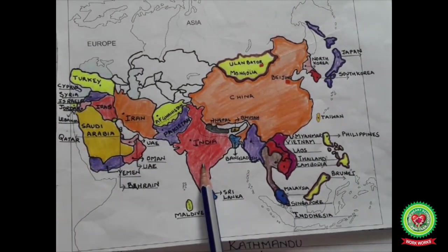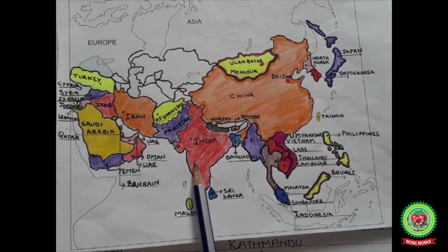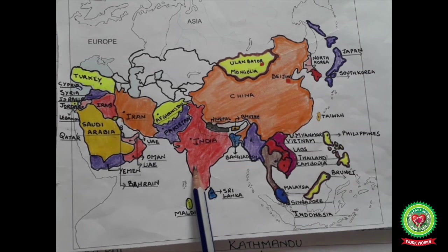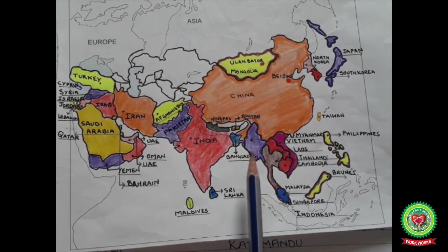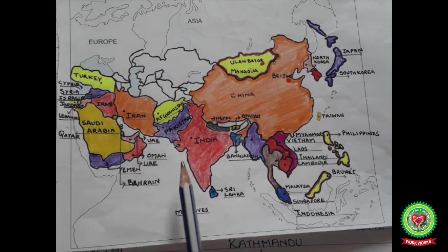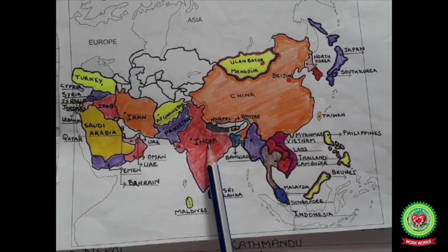South Asia is the southern region of the Asian continent which comprises the sub-Himalayan countries and some adjoining countries to the west and to the east. The main objectives of the South Asian countries are to promote economic growth, improve the quality of life, maintain peace, cultural development, and social progress in the region, and provide all individuals the opportunity to live in dignity.